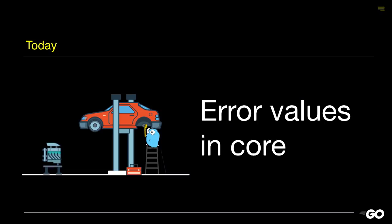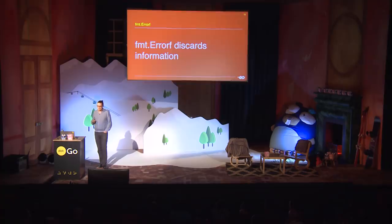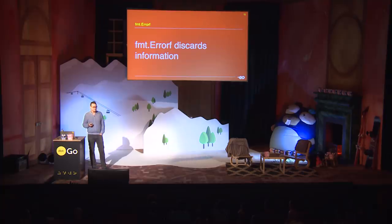Let's look a little bit more at the core libraries in this respect. A very common way of creating error values is using fmt.Errorf. This allows you to annotate some text with an existing error. The problem with fmt.Errorf is that it discards information — you lose the ability to do programmatic analysis in any sane way, except for checking for substrings. You also lose the ability to annotate an error with detailed information when printing, because you just don't know the structure of the error anymore.